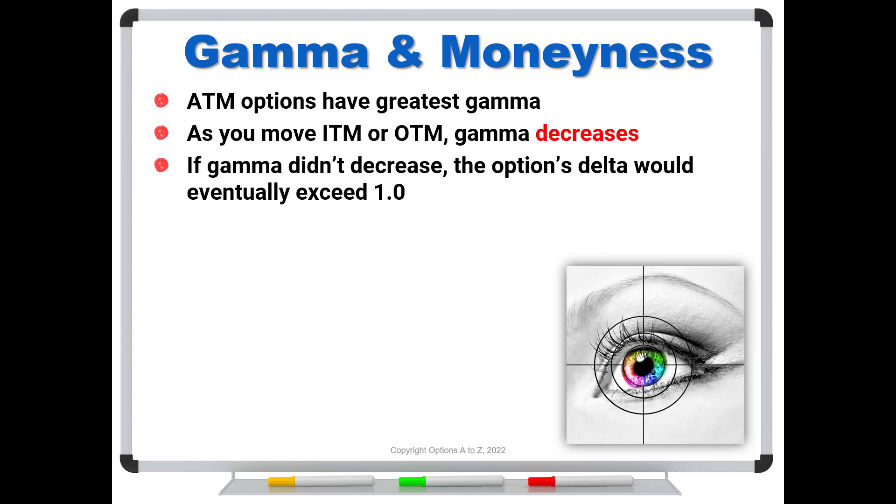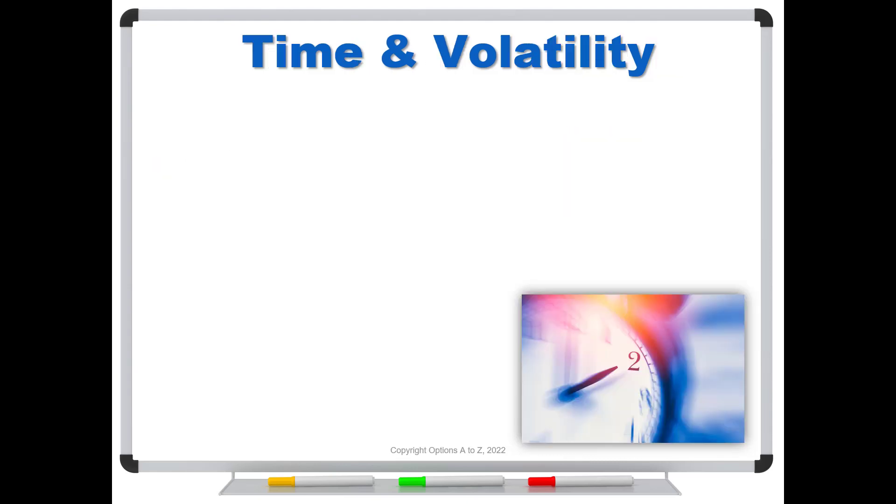So now once you understand that relationship, it's pretty easy to put together. Recall from a previous video about time and volatility effect. Your in the money options become more likely to expire out of the money if we increase time to expiration, or if we increase volatility.